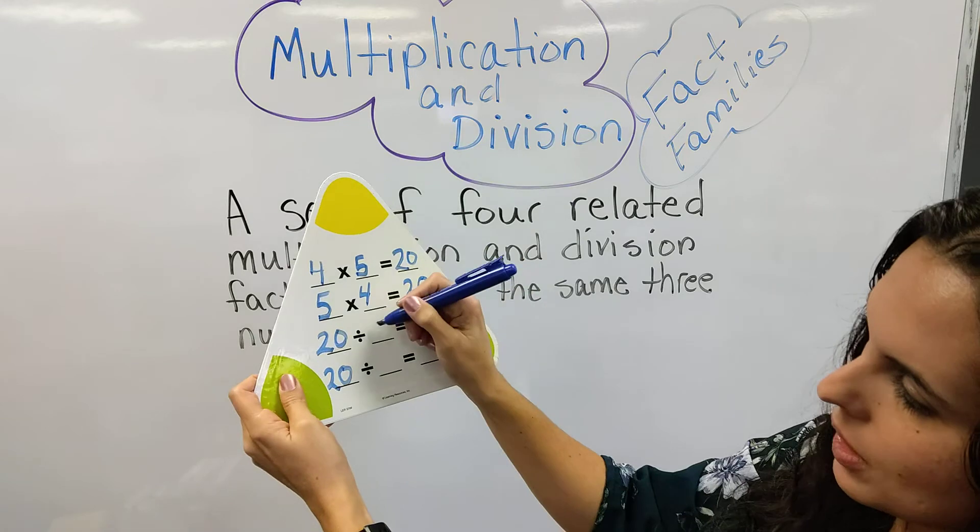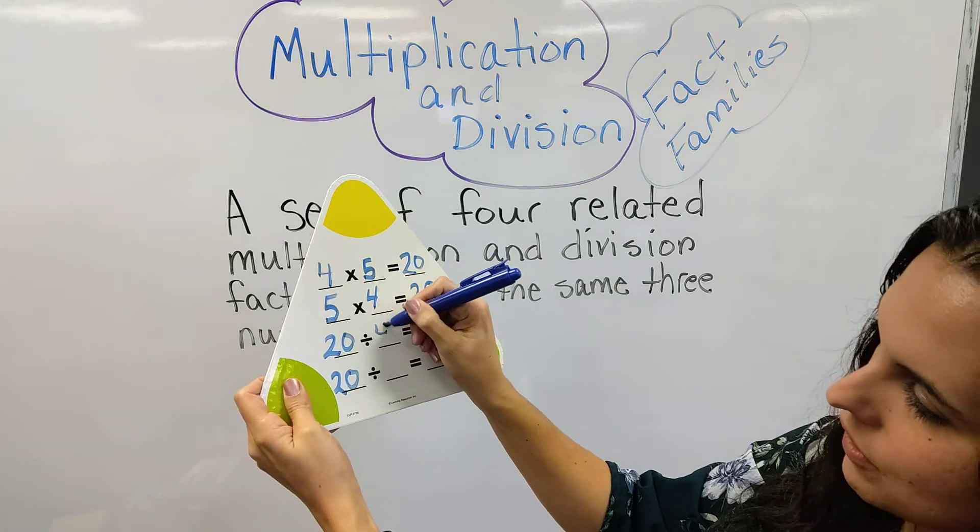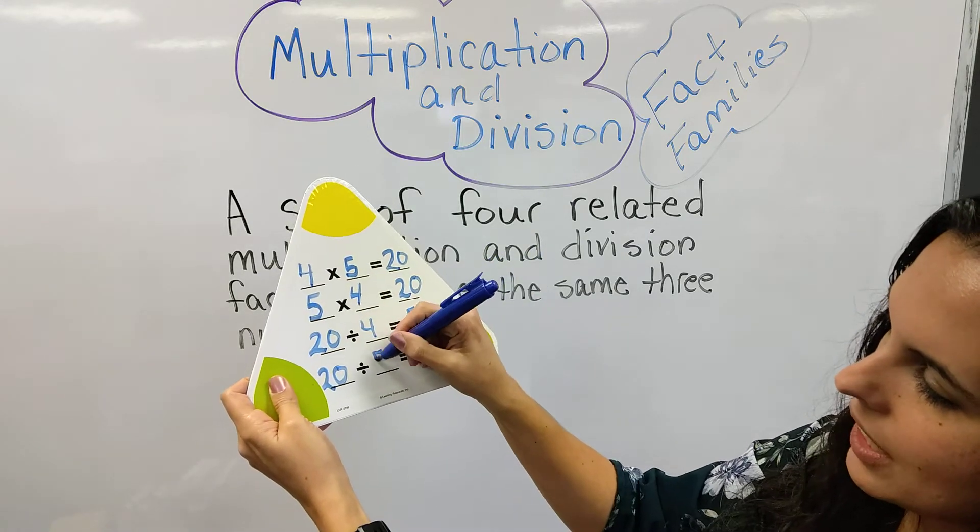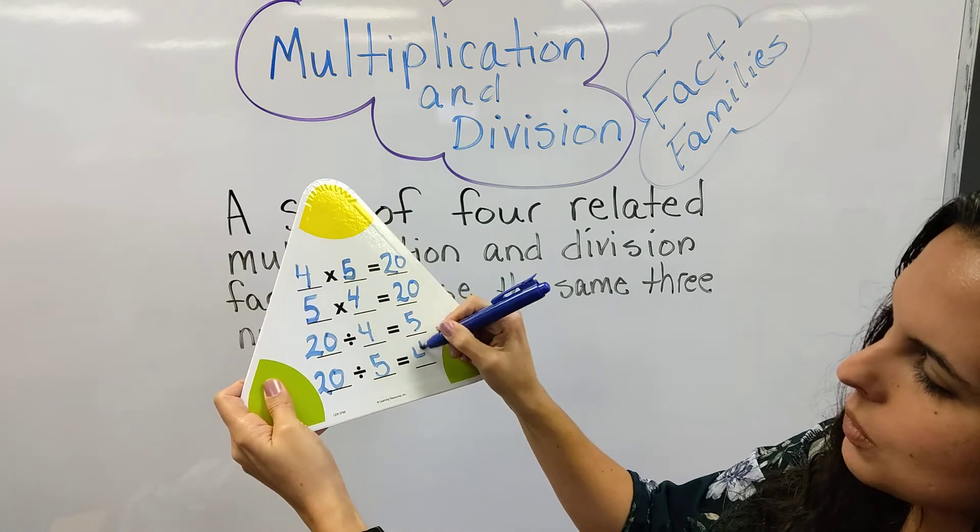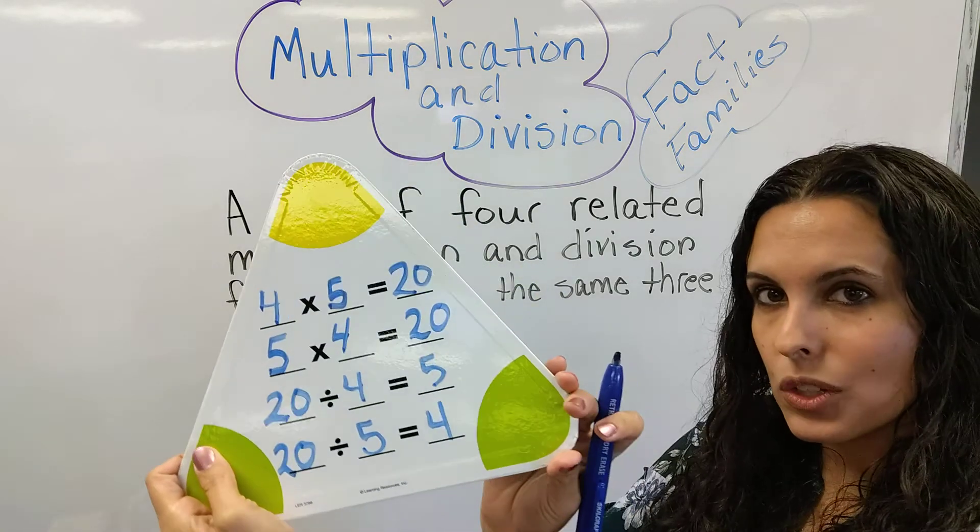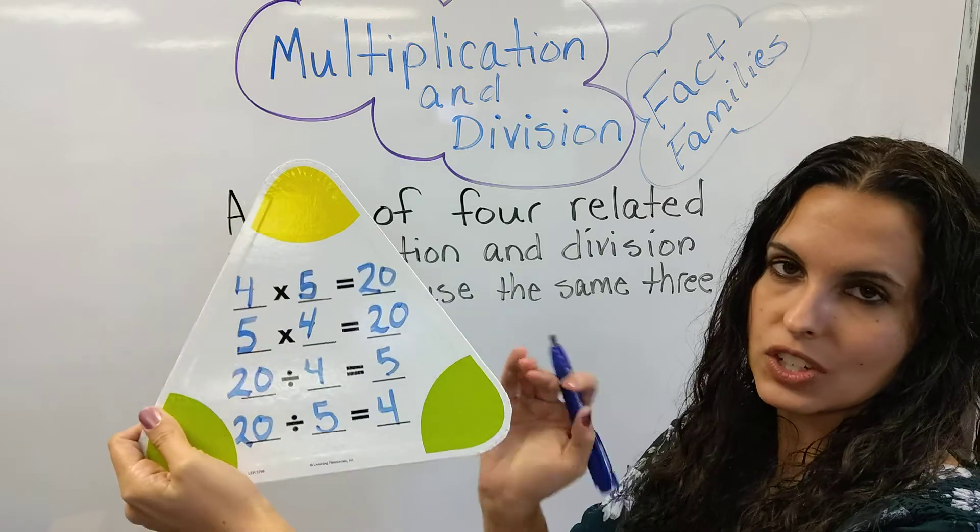So now your 4 and 5 trade places. 20 divided by 4 equals 5. 20 divided by 5 equals 4. That's how you do multiplication and division fact families.